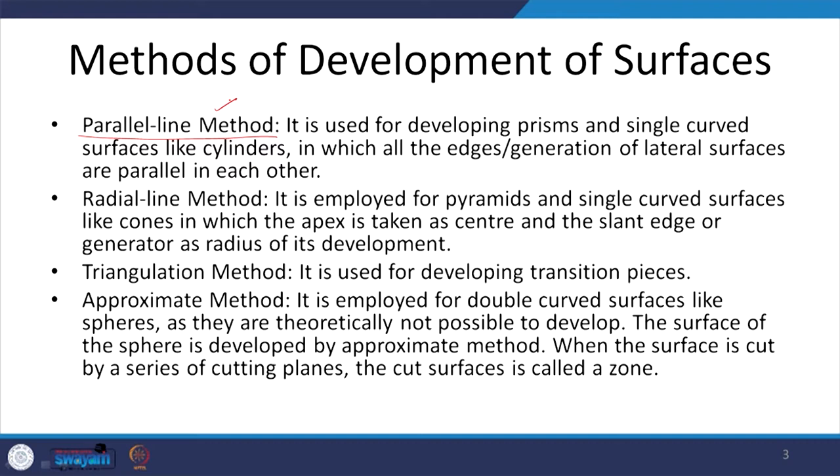If you recall what we were talking about during orthographic projections of prisms, we said that we will largely see rectangular surfaces — even when they are cut, in elevation or depending upon position — because that is what is connecting the two bases. The two bases could be any shape — triangle, pentagon, hexagon — but the surface connecting them is essentially a rectangle. So with parallel lines in the height, rolling the prism on a flat sheet gives the entire surface. That is the parallel line method, used for all prisms and single curved surfaces like cylinders.